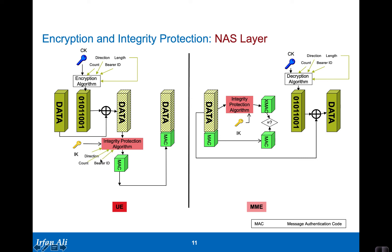For integrity protection, the length parameter is not used because the output is a message authentication code — a fixed-length hash, which is 4 bytes long. Other than that, the COUNT, direction bit, and bearer ID are the same inputs as used for the encryption algorithm. On the receiving side, the same COUNT, direction, and bearer ID go into the integrity protection algorithm to compute the expected MAC (XMAC).